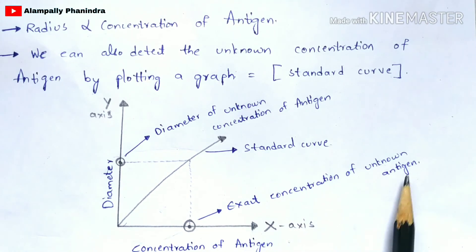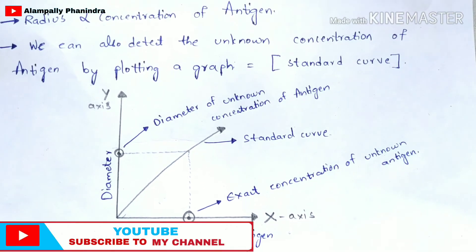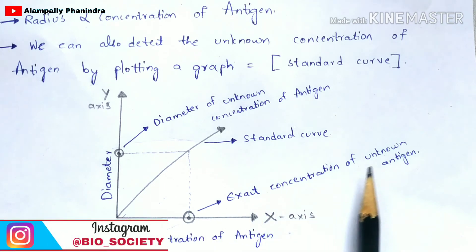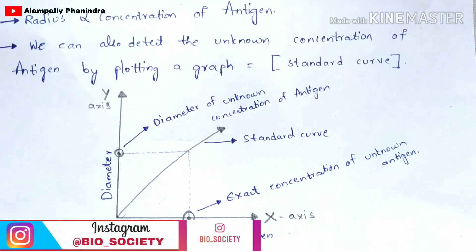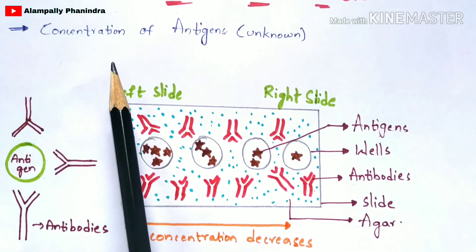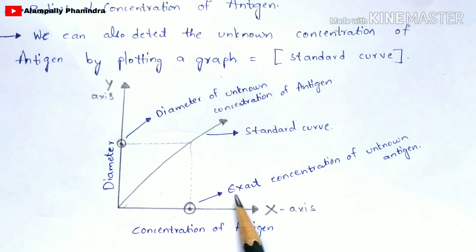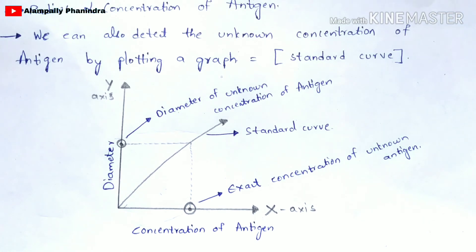Since the x-axis indicates the concentration of the antigen, placing the point on the graph gives the exact concentration of the unknown antigen. So the main aim of radial immunodiffusion, as stated at the beginning, is to determine the concentration of an unknown antigen. We can know the exact concentration of an unknown antigen by plotting a graph and performing this technique.